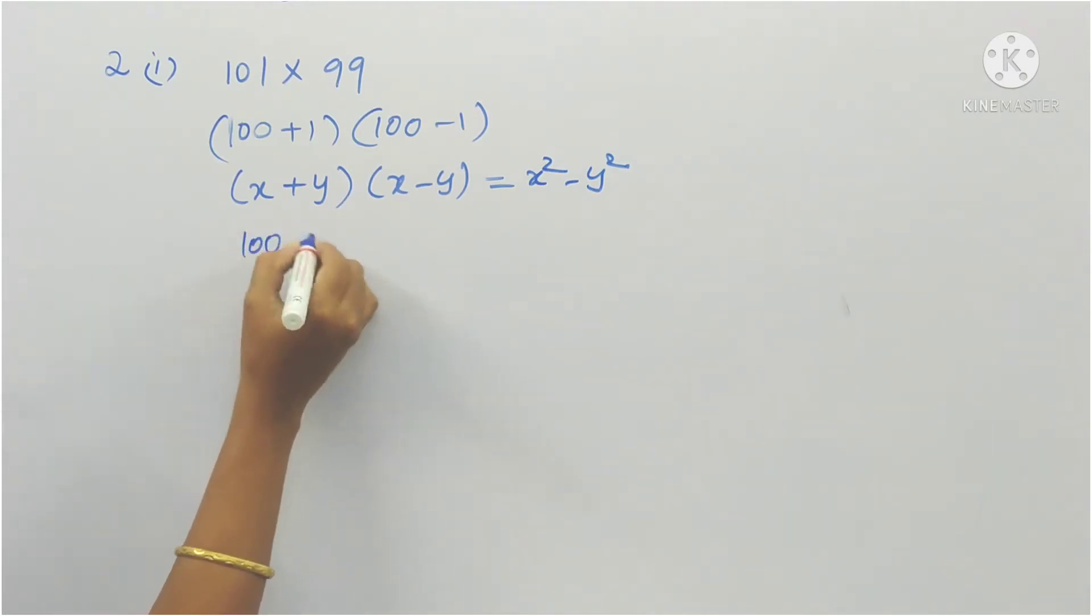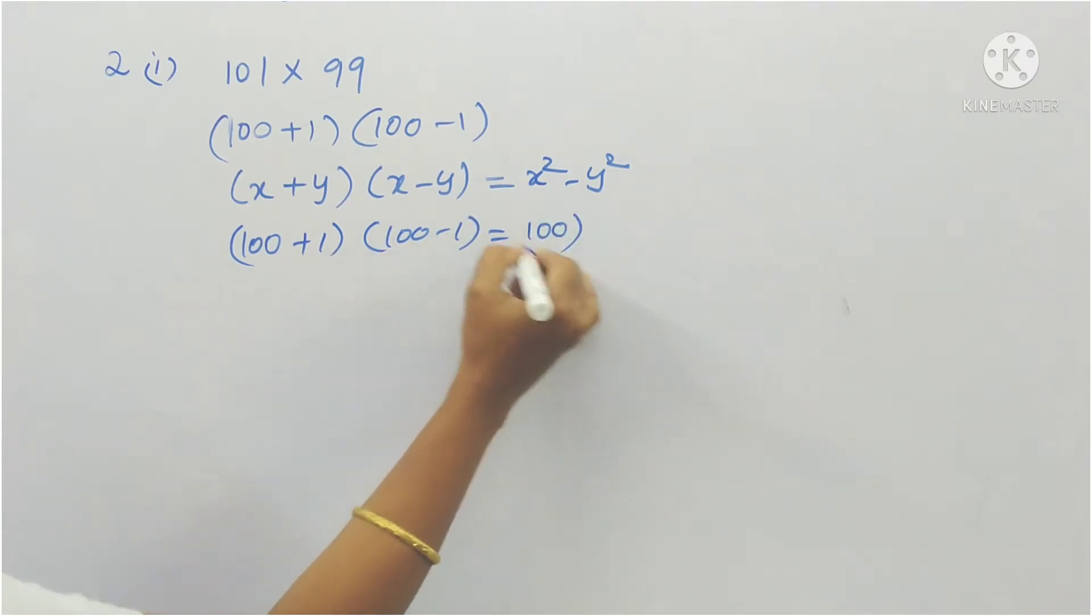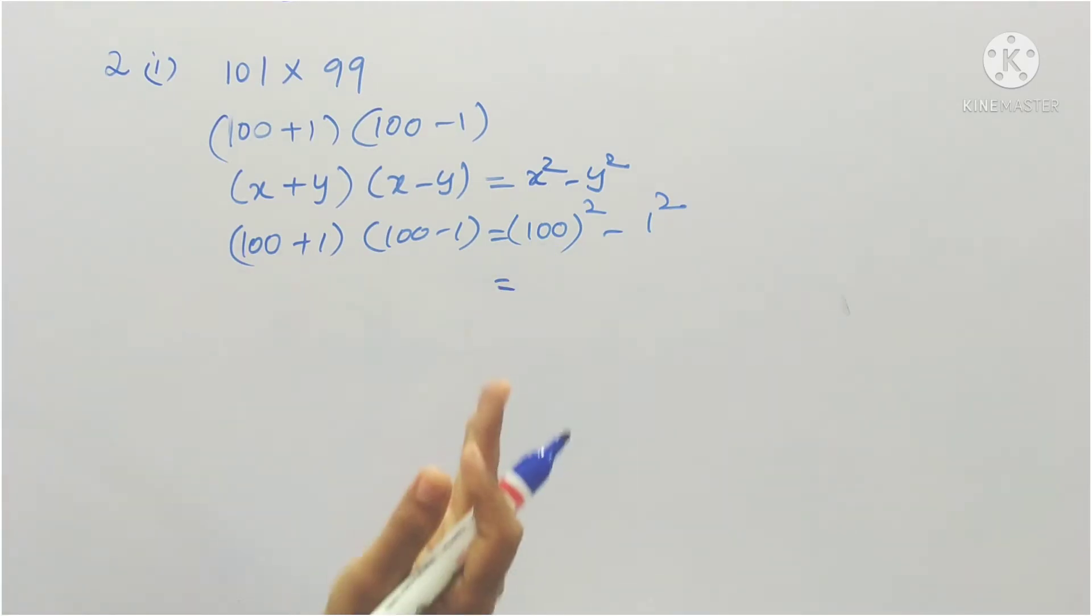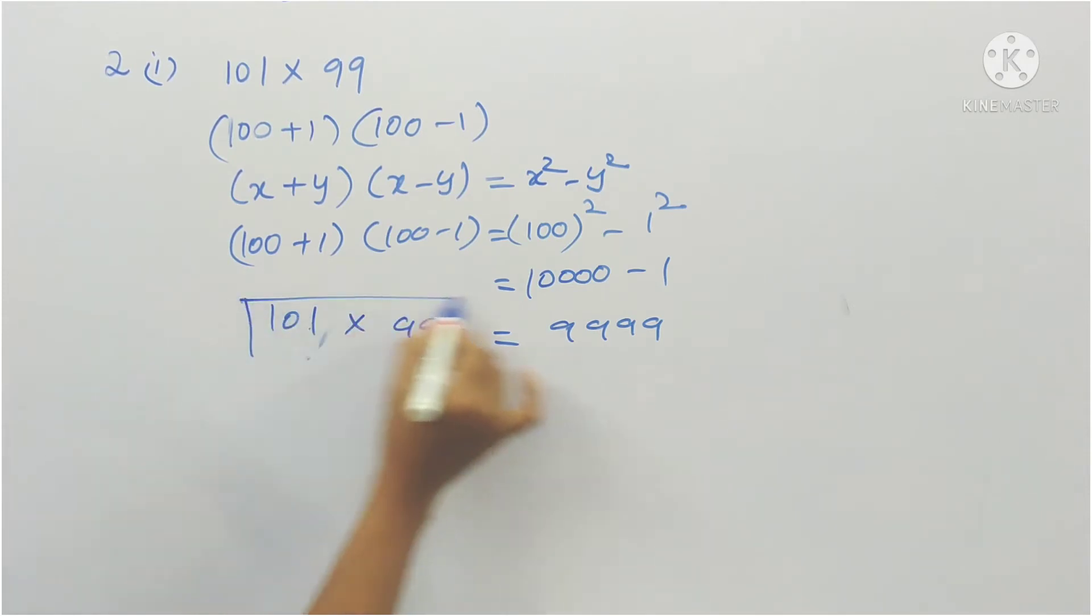So x plus y into x minus y is x squared minus y squared. Similarly, 100 plus 1 into 100 minus 1 is equal to 100 squared minus 1 squared. 100 squared means already we have two zeros and we should double the number of zeros. So four zeros minus 1. That means four nines will come: 9,999.